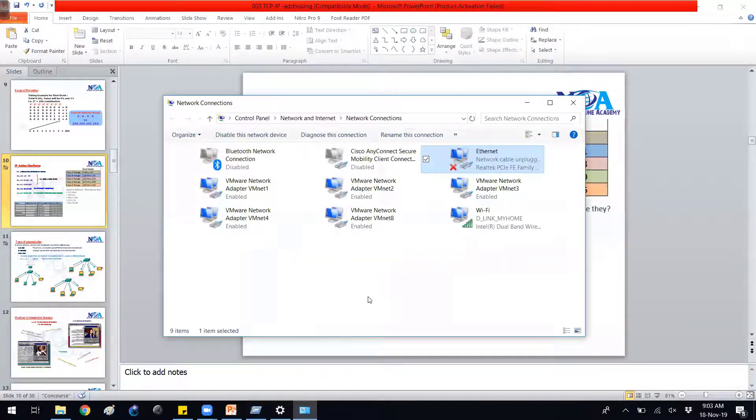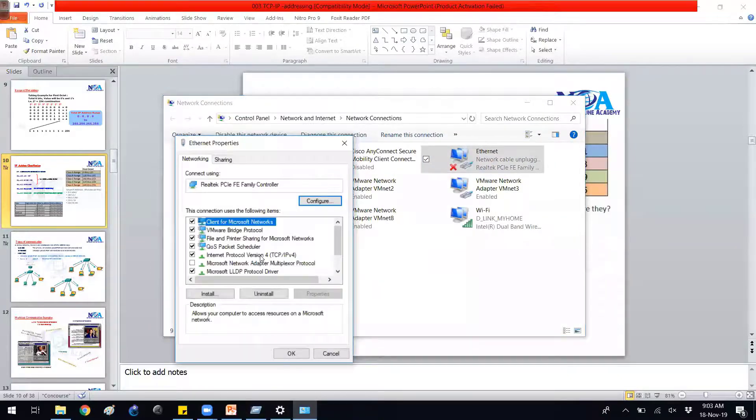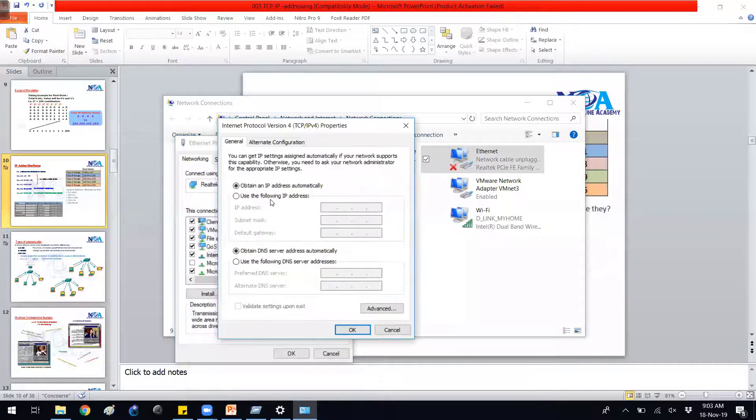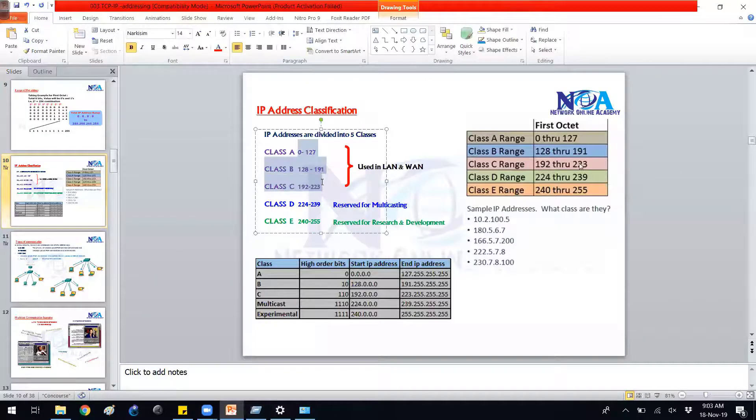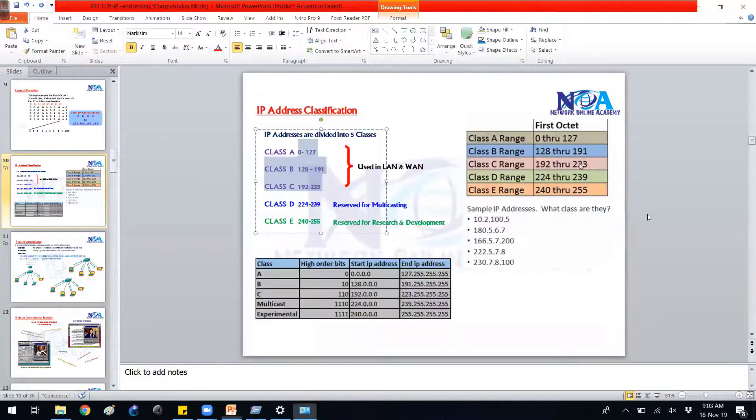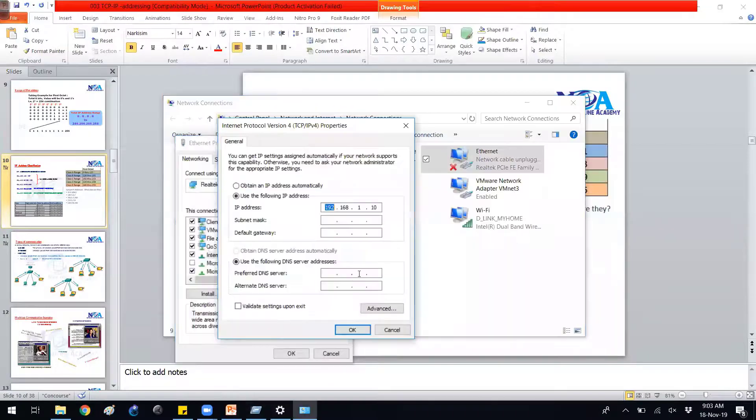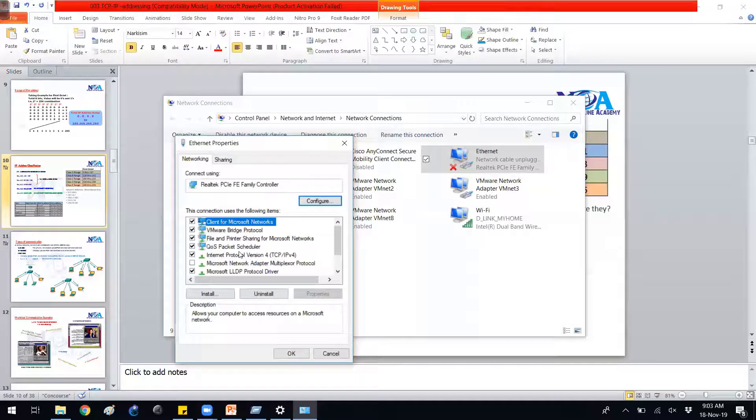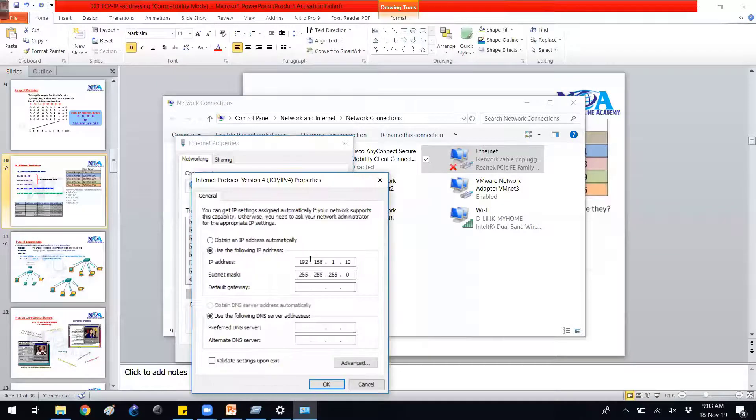In general, so if I go and try to verify that, if I go to my local area connection properties and if I try to assign the IP address in the range of Class ABC, I can assign. Let's say I'm giving 192.168.1.10. So 192 comes in the class range of C. The device, of course, subnet mask we'll talk about this later. So the device will accept. So if I try to give any ABC classes, it will accept.